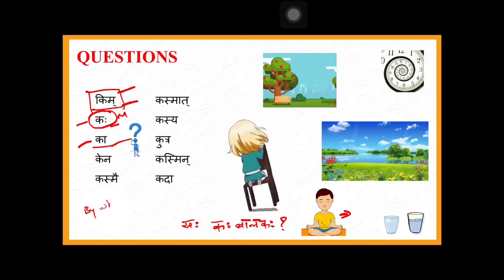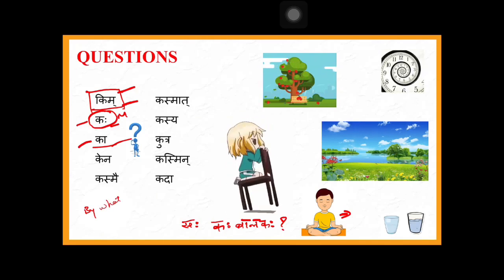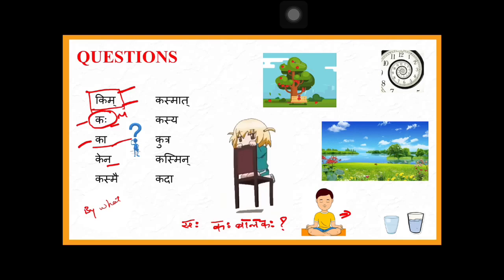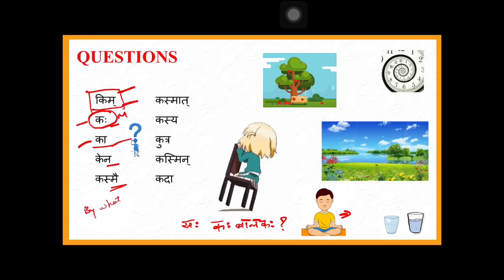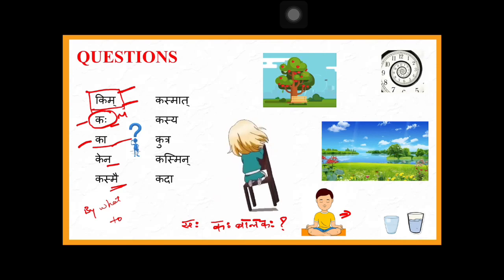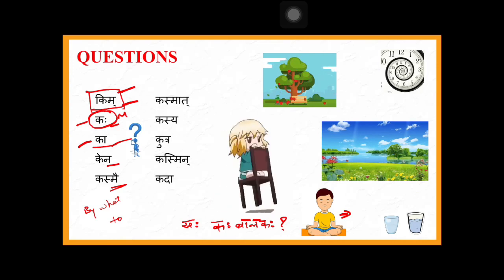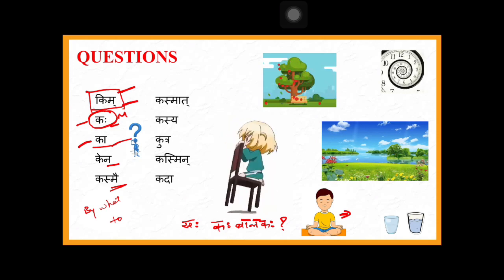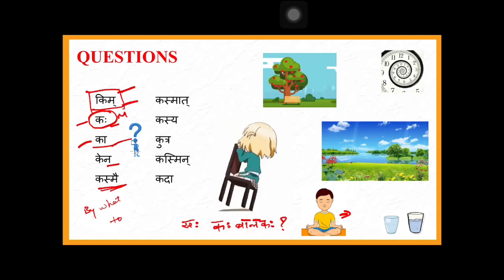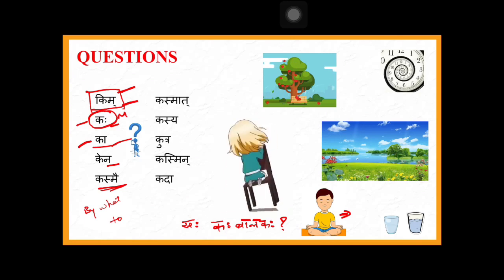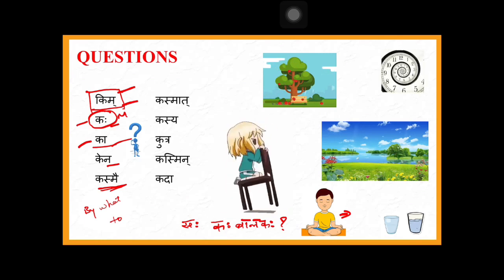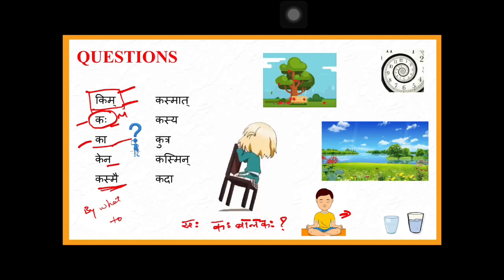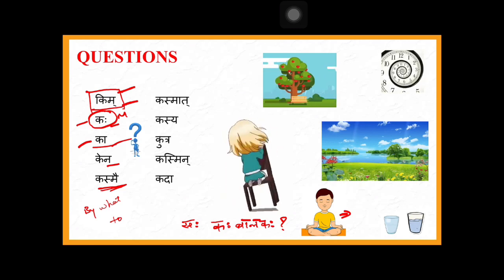Kena is used when someone is going somewhere — by what means? 'I am going by bus, by car, by scooter' — that is kena. Kasmai is used when giving something to someone — 'to whom.' For example: kasmai lekhaniim dadati? Kasmai pustakam dadati? The answer would be: I am giving this book to ramaha — so kasmai shows the recipient.